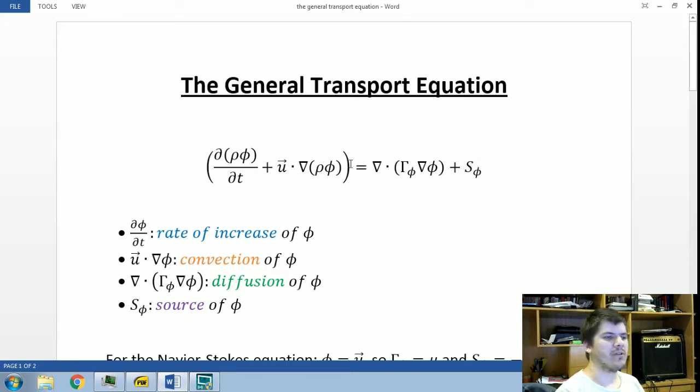This variable phi can be almost any quantity of interest in a flow which is being transported. For example, temperature, concentration of a certain substance, like pollutants in a river, pollutants in the atmosphere, and so on.